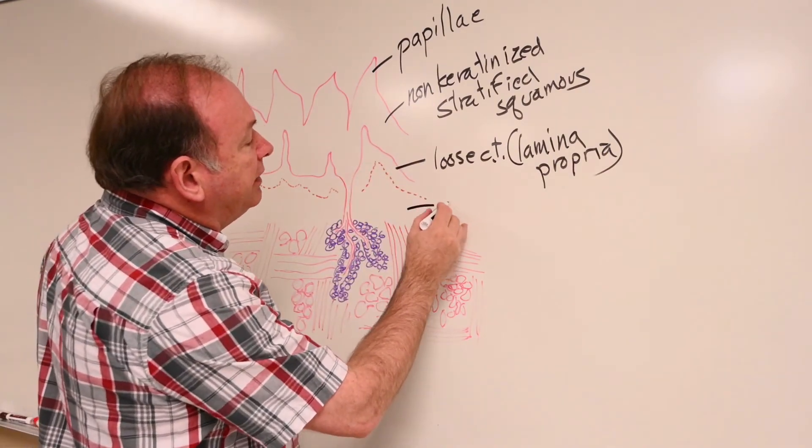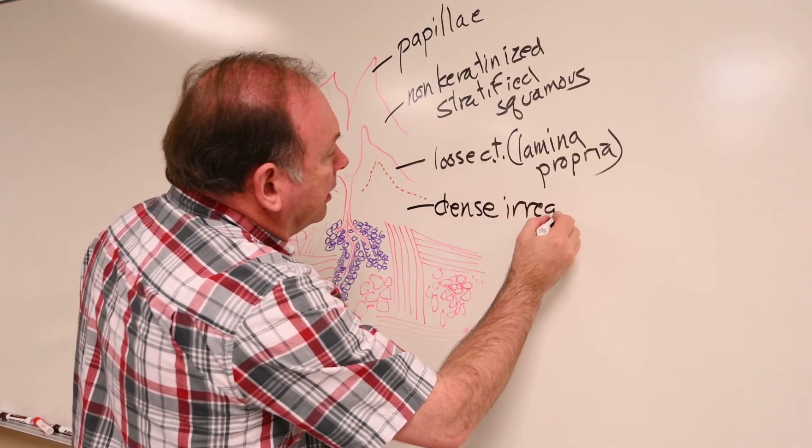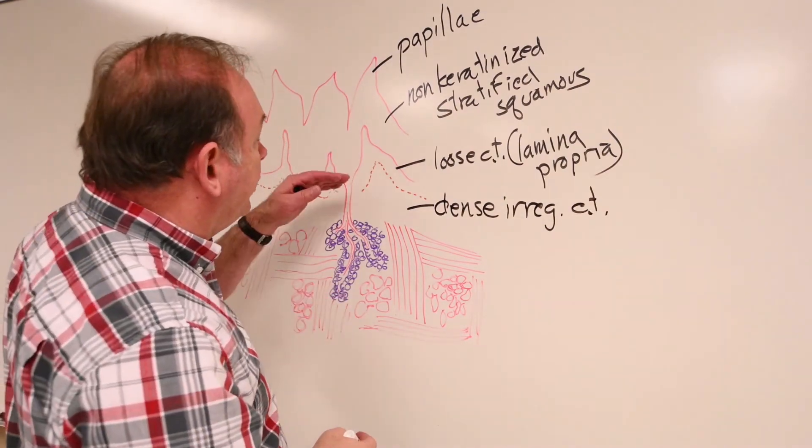And then below that, we have a dense, irregular connective tissue, very much like your reticular layer of your dermis.